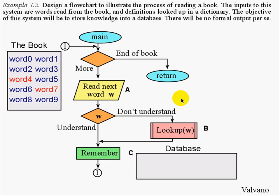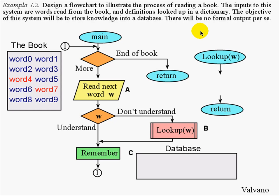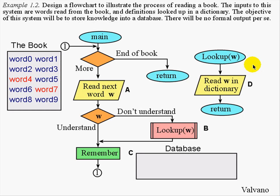Subroutines have two parts. The first is the invocation, shown here, which is where we call it. We pass in the parameter, we call the subroutine, and when the subroutine is done, it will return the answer. The second part of a subroutine is its definition. We have another entry point signifying the beginning of the subroutine. This entry point will accept the parameter — in our case the word w — look it up, perform the function as desired, and return the result. The inside of a subroutine is just like any other function, any other program. In this particular case, we are going to read the word in a dictionary and look up its meaning, returning the value.